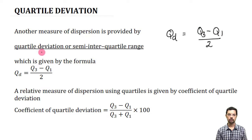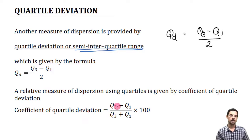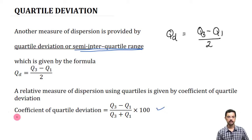Quartile deviation is also known as the semi-interquartile range. The relative measure corresponding to quartile deviation is known as the coefficient of quartile deviation, and it is defined as (Q3 - Q1) / (Q3 + Q1) × 100.